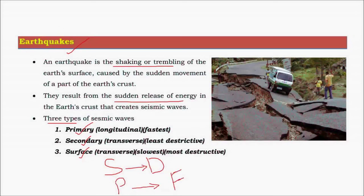The secondary waves, which are transverse in nature, are the slowest waves. The primary waves are the fastest and the first to arrive. The secondary waves arrive next, and the surface waves are the last arriving waves.